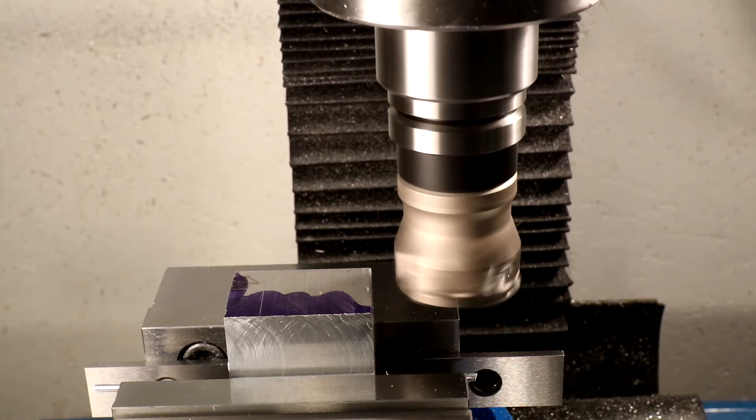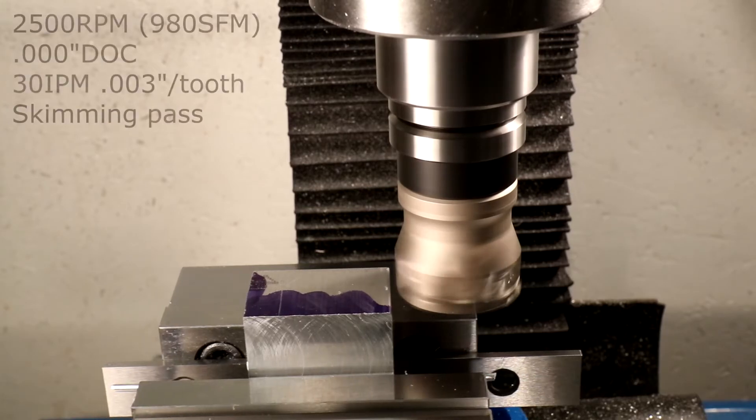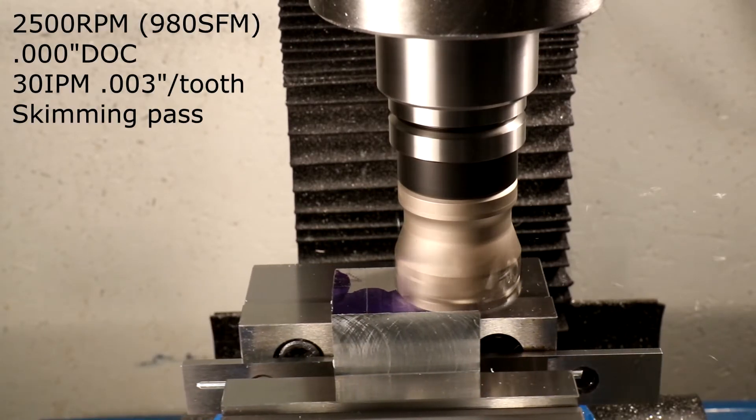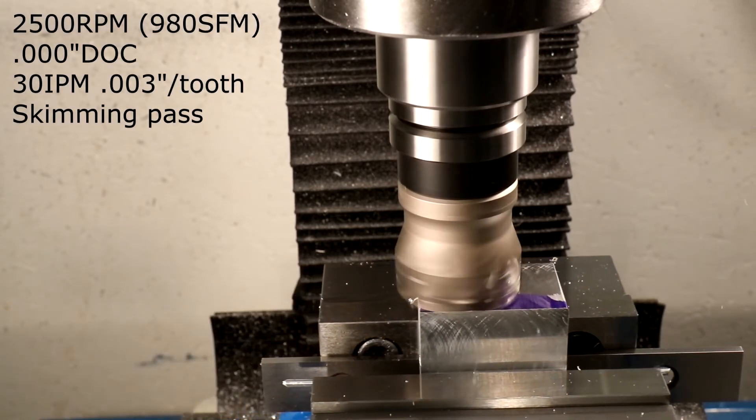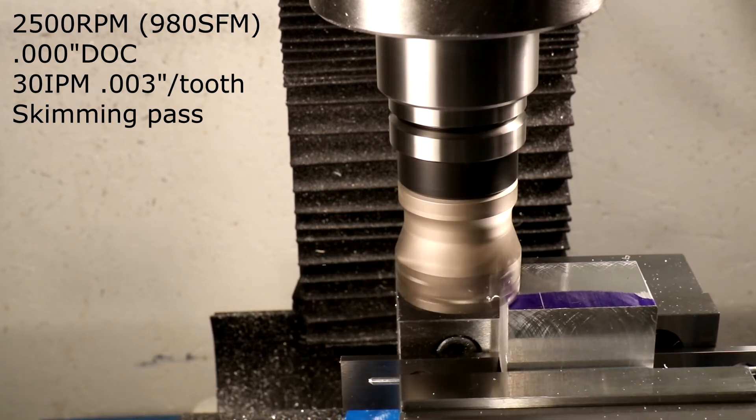Ideally, the skimming cut at height 0.000 should not remove any material, but the raw extrusion will never be perfectly flat, and so perhaps a thou was removed from the high side.